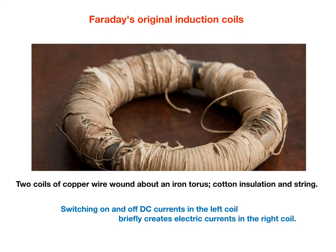This photo shows original coils of Michael Faraday, perhaps coils that he used in 1831. Two coils of copper wire are wound about an iron torus, and the insulation is provided by cotton held together with string. As we do today, Faraday observed that switching on and off DC currents in the left coil briefly creates electric currents in the right coil.